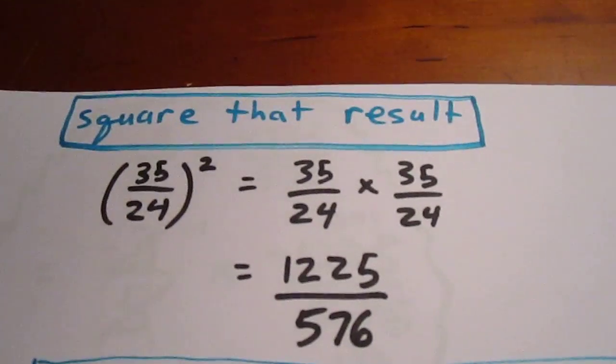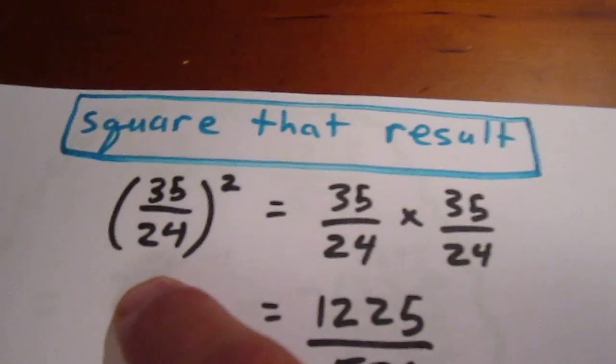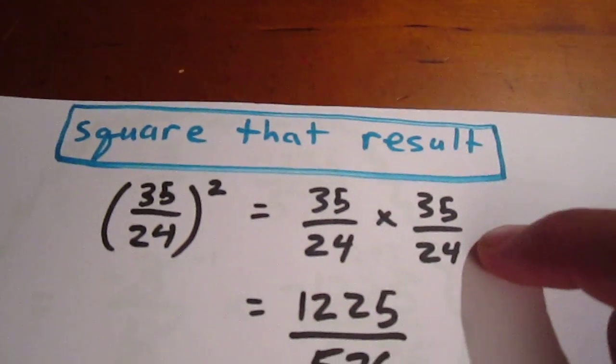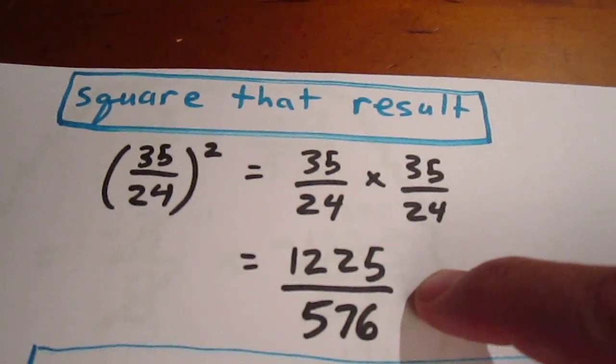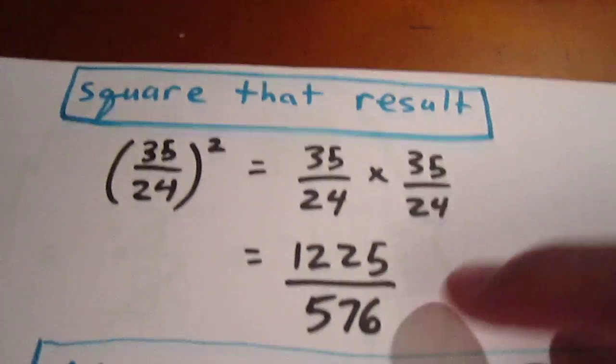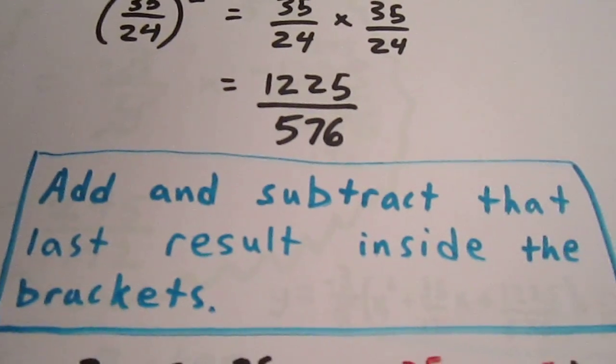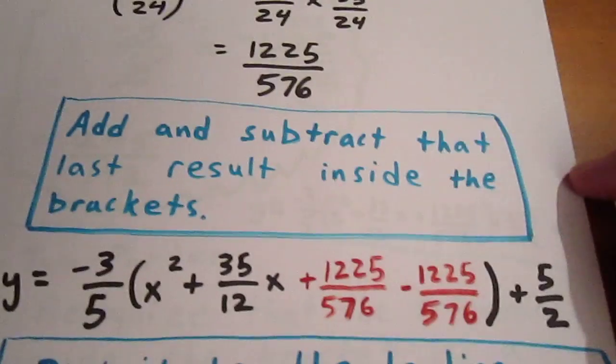We're now going to square that result. 35 over 24 quantity squared is the same as 35 over 24 times 35 over 24, which is 1,225 over 576. We now want to add and subtract that last result inside the brackets.